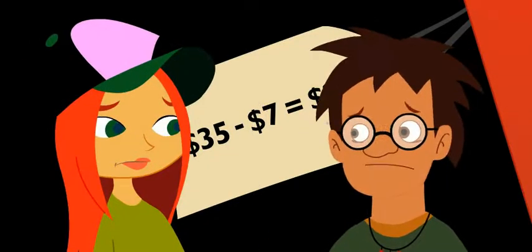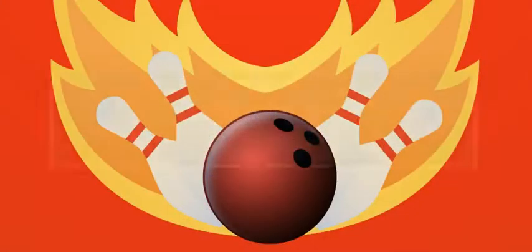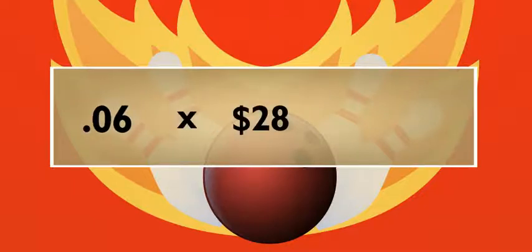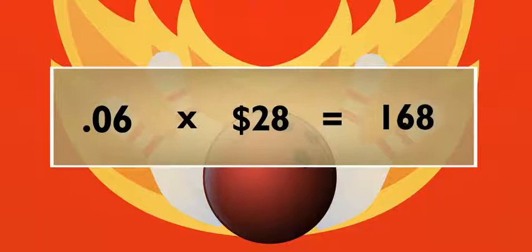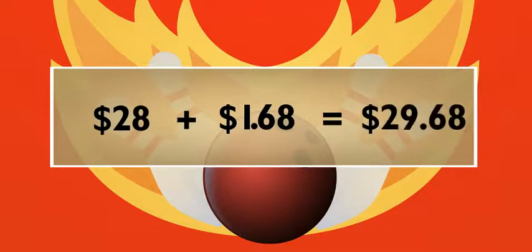Oh no. How much? I'm pretty sure it's six percent. Come on, let's figure it out. Six percent is six hundredths — that's .06 times twenty-eight dollars is 1.68. Move the decimal — one dollar and sixty-eight cents. So twenty-eight dollars plus a dollar sixty-eight tax is twenty-nine sixty-eight.